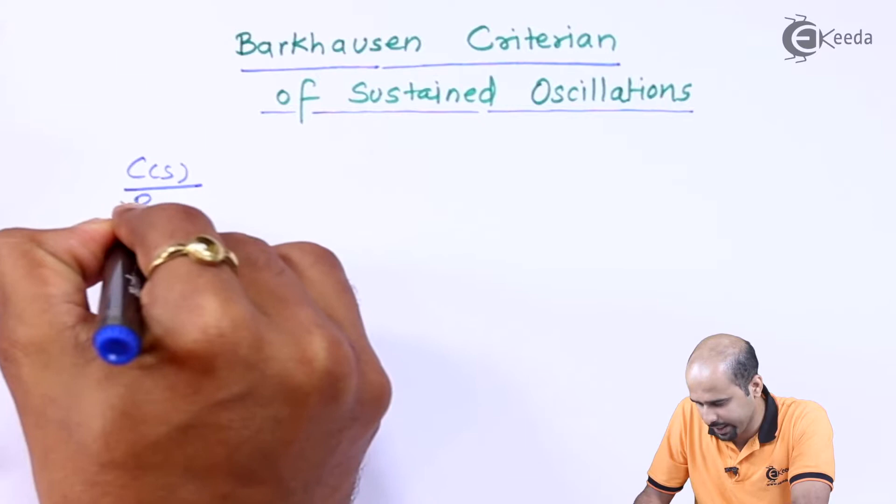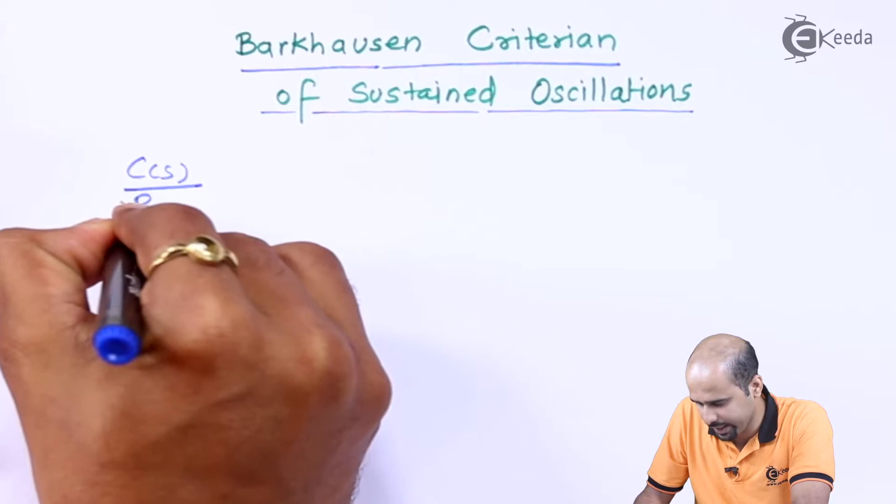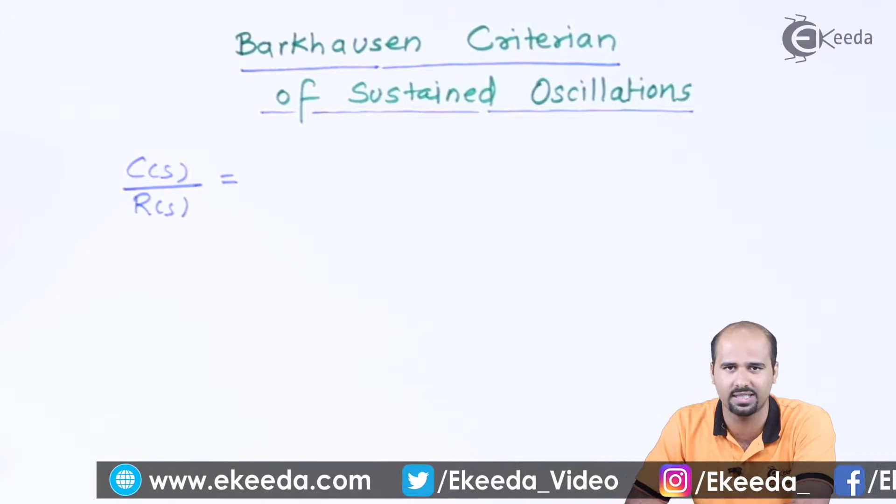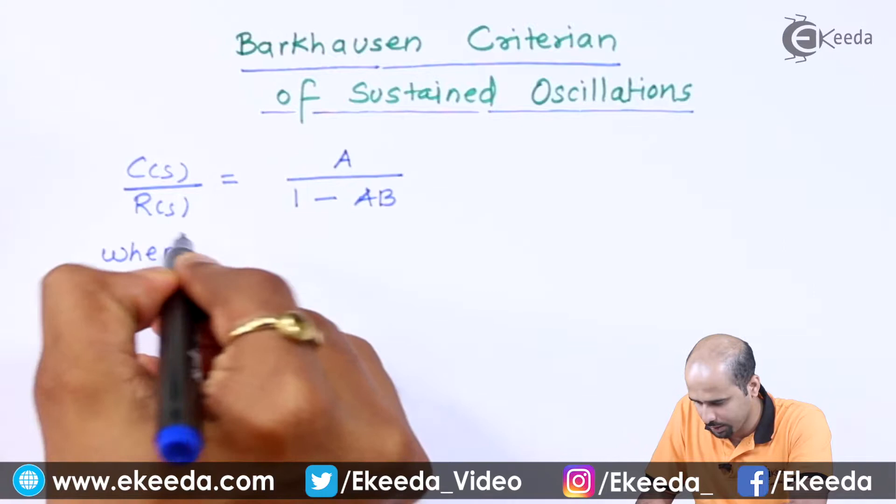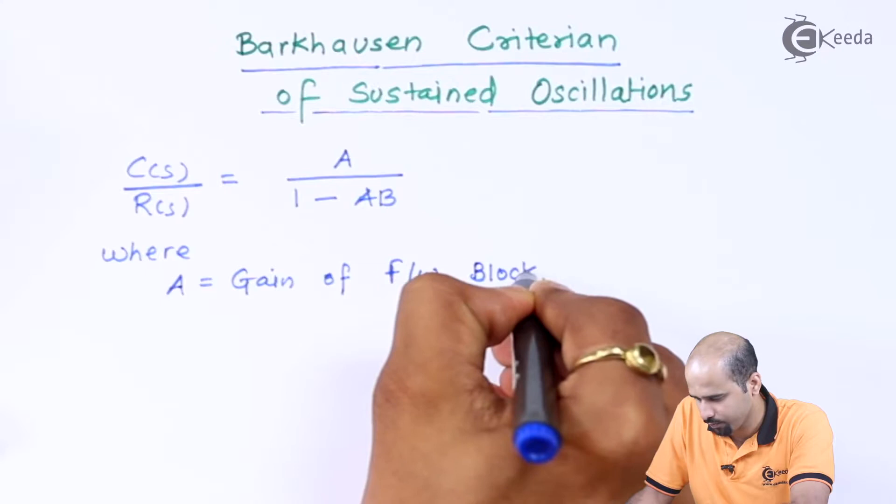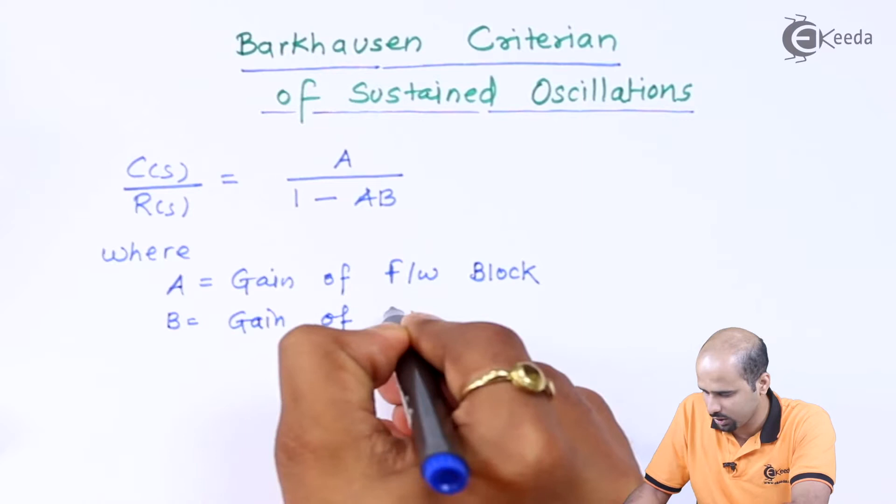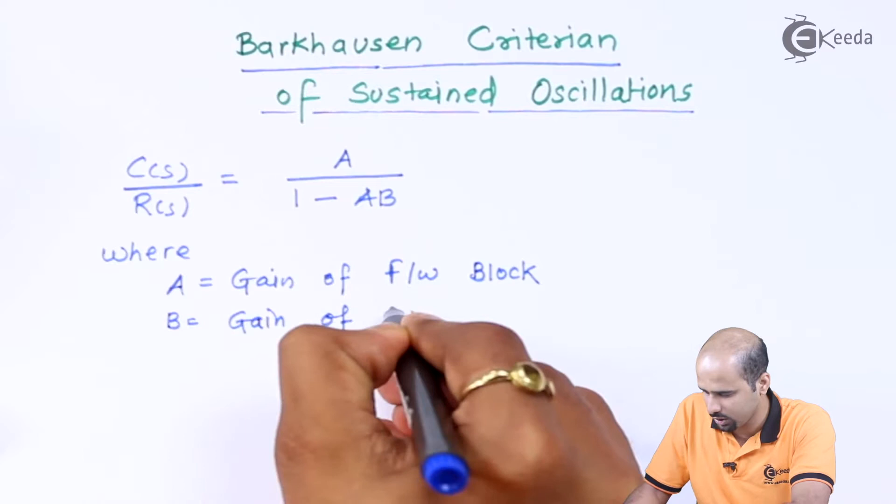We have got the C(s) divided by R(s). That is nothing but the transfer function or otherwise we can say that it is nothing but the gain with feedback. So we have got as A divided by 1 minus AB, where A is nothing but gain of forward block and B is nothing but gain of feedback block as far as definition of oscillator is considered.